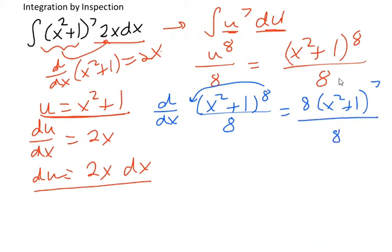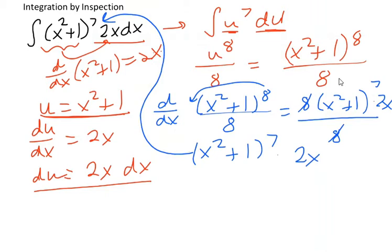And don't forget, you also have to use the chain rule because the stuff in the parentheses depends on x. So the derivative of the inside is 2x. And the 8 will cancel and you're left with x squared plus 1 to the 7th times 2x, which is exactly the original integral we were solving for.